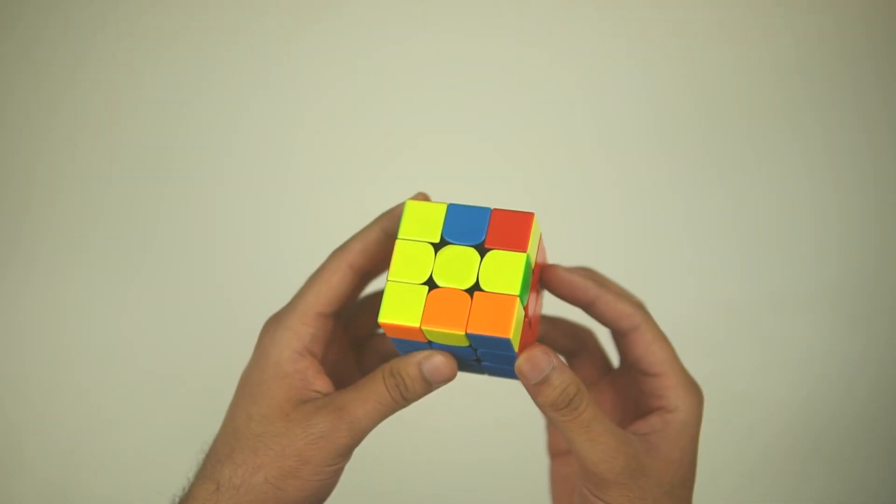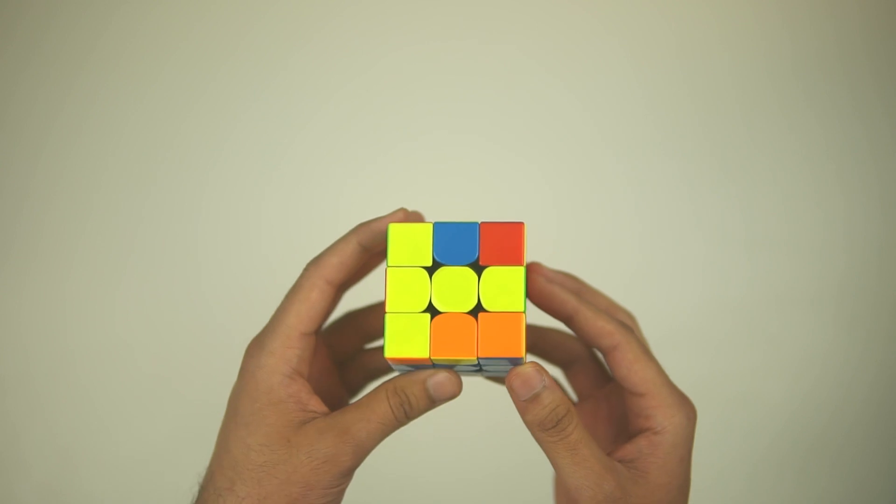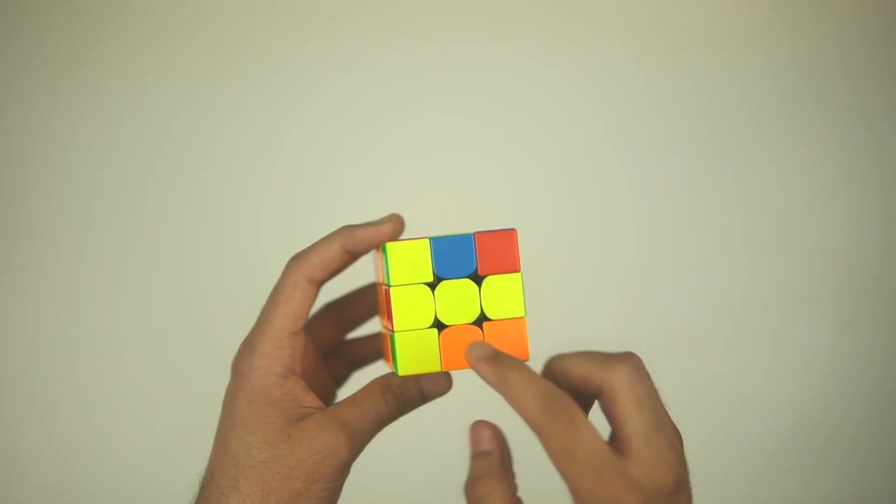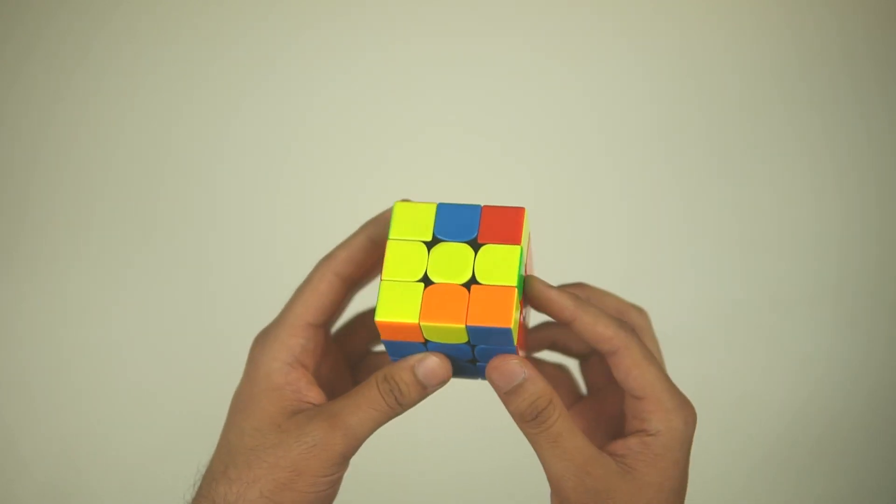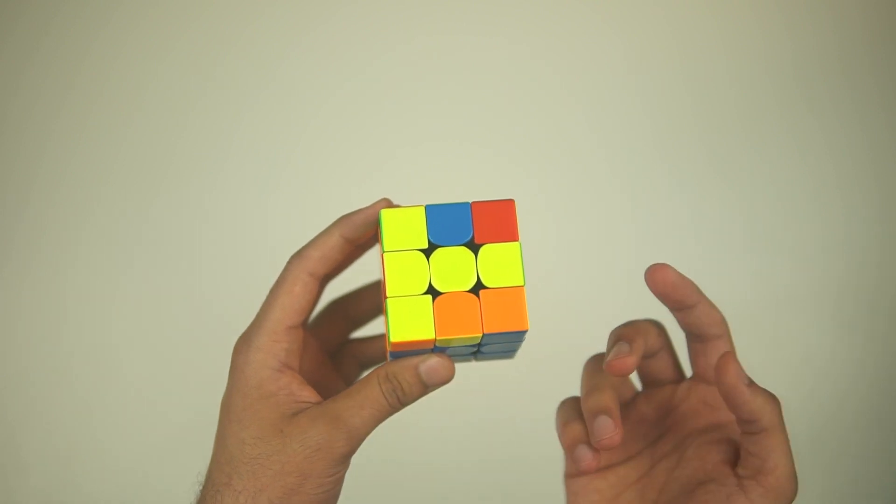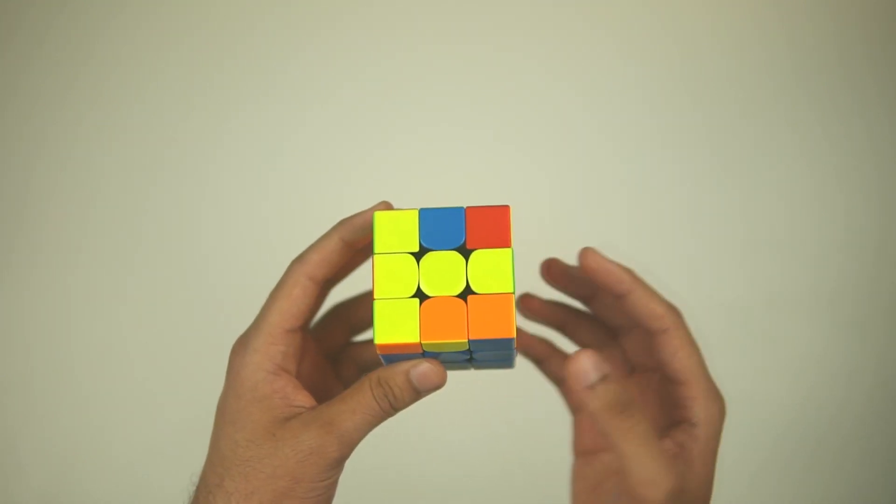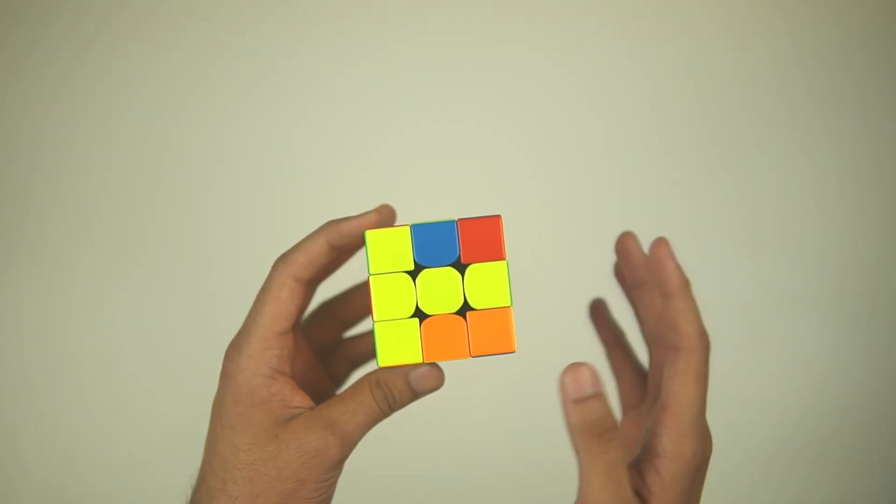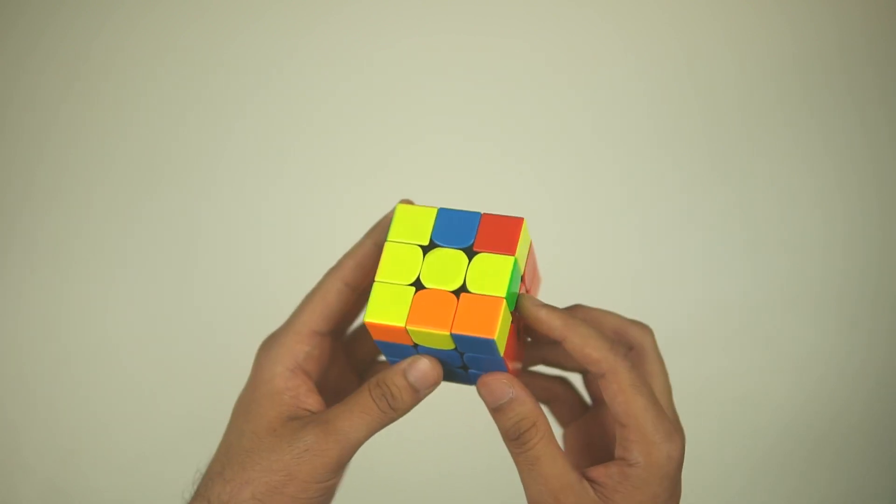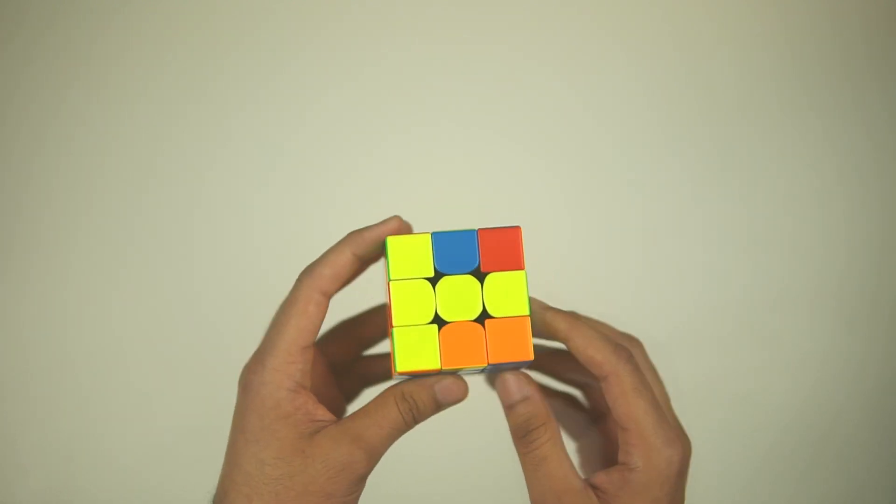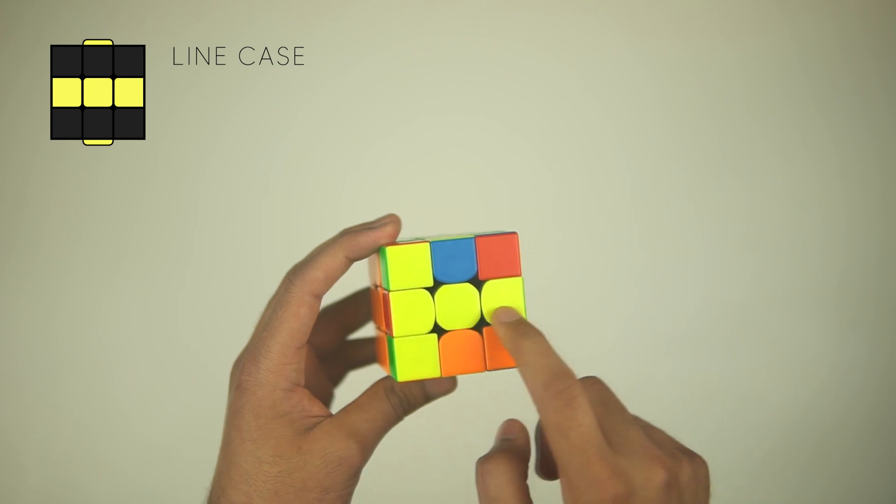When we're solving the yellow cross, we're only concerned about the yellow edge pieces. We don't care about what the corners look like at all. You could have one corner solved, two corners, all of the corners, it doesn't matter. Ignore those, just only focus on how many edges you have. In this case, we have two edges solved, and they create this line shape.